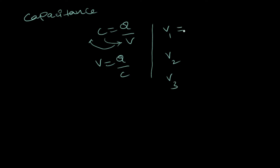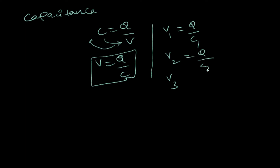V1 can be written as Q by C1, V2 is Q by C2, and V3 is Q by C3. The total potential difference for the series combination is equal to V1 plus V2 plus V3.